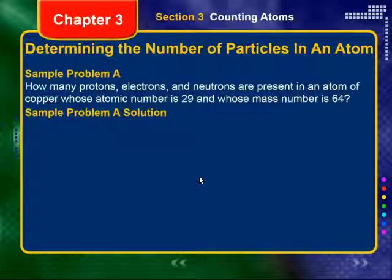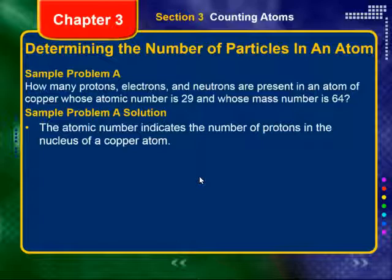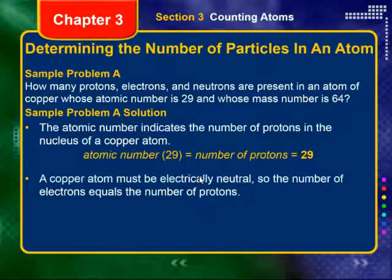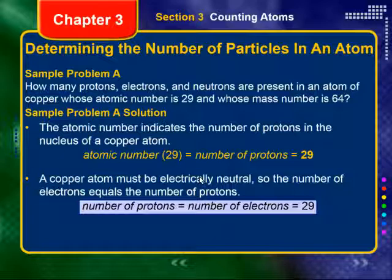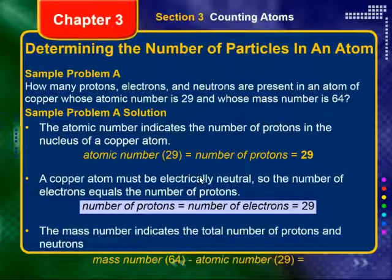Let's look at a sample problem. How many protons, electrons, and neutrons are present in an atom of copper, whose atomic number is 29 and whose mass number is 64? The atomic number indicates the number of protons, so protons equals 29. A copper atom must be electrically neutral, so electrons also equals 29. The mass number is 64; subtract the atomic number of 29, and we get 35 neutrons. So: protons 29, electrons 29, neutrons 35.